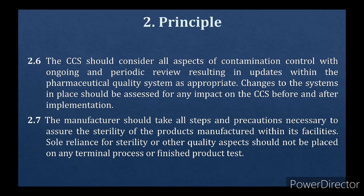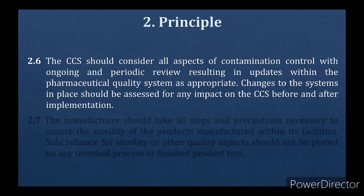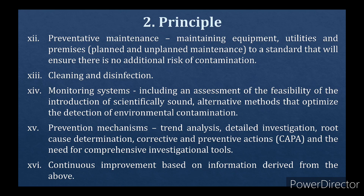So, generally, the principles of EUGMP Annex 1 focus on facilities, equipment and processes being required to develop a contamination control strategy. The main topic is the development of a contamination control strategy, and all variables and requirements need to be implemented and included — you can include all these points in your Contamination Control Strategy documents.